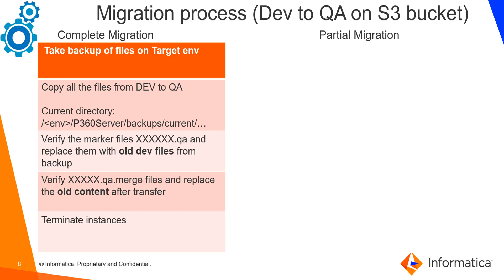Now the whole custom configuration and the main configuration file — like server.properties — are up to date as of the QA environment. Everything is translated as per the QA environment, and since all files were copied from dev to QA, it also contains the custom code migration. Then we terminate the actual instances so that a new instance gets created with the files on the S3 bucket. The new instance will be created by taking all files from the S3 bucket as a reference and starting the server. You can verify the current state of the server post-migration by checking the QA environment P360 server backups current directory. A similar current directory will be present for other components like supplier portal or web search as well.